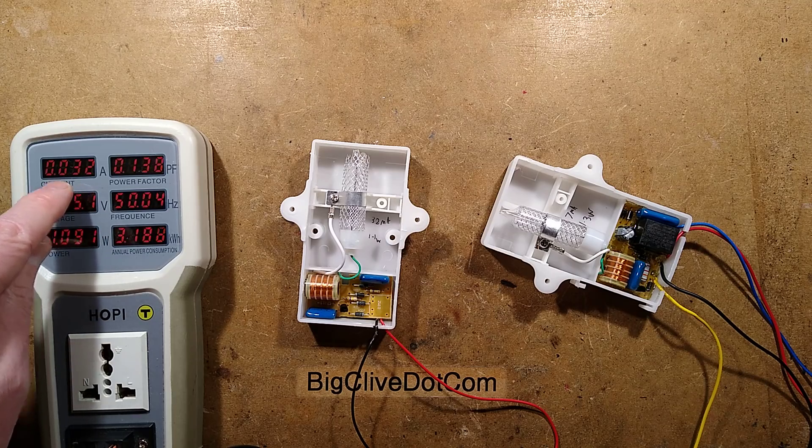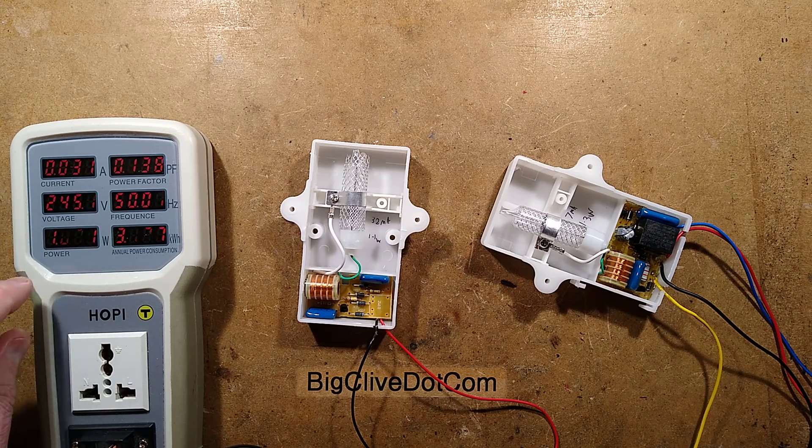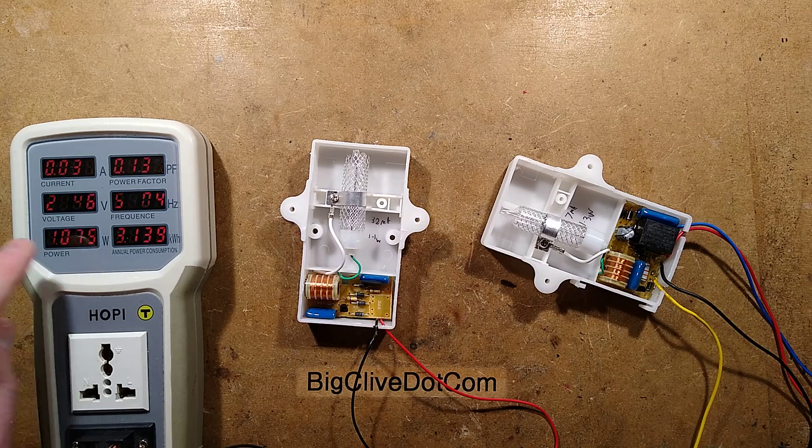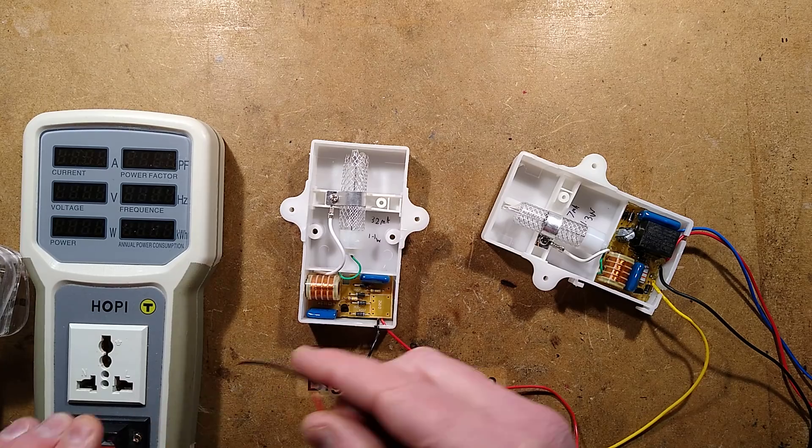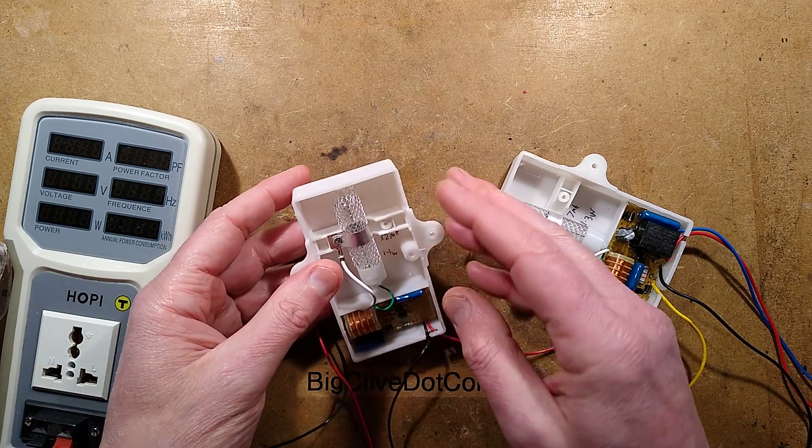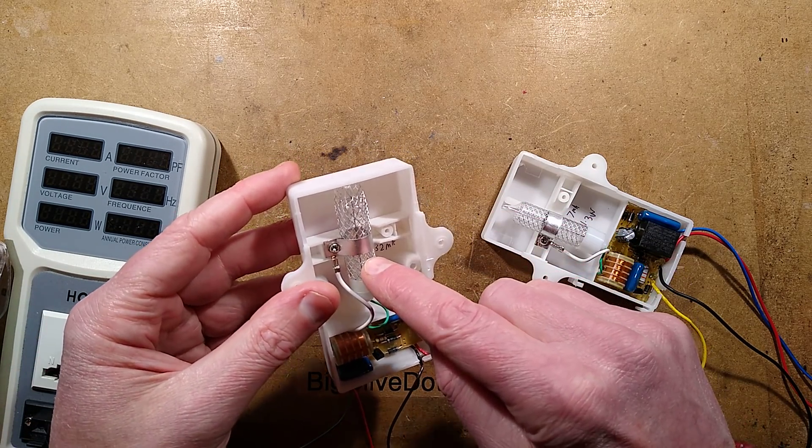The current is showing 32 milliamps but the power is actually lower at just over 1 watt. So what I'm going to do now is show you what this thing looks like in the dark because this tube is very interesting.